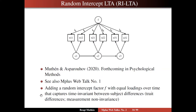This factor F captures time invariant between-subject differences — often referred to as trait differences in psychology. In psychometrics, you might refer to it as measurement non-invariance that's constant over time. Measurement non-invariance refers to the fact that the probability of an outcome of a latent class indicator given latent class is different for different individuals with different F values, which also influences the latent class indicator outcomes. Because you have differences across individuals in the conditional latent class indicator probabilities, you have measurement non-invariance, and it's a constant one across time.